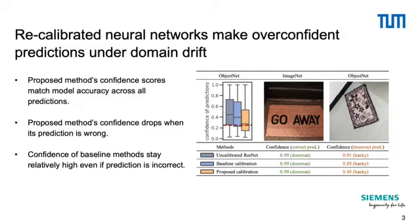As you can see in the figure on the right, the task is to recognize a doormat. The doormat in the middle is drawn from the test distribution, which is similar to the train distribution — thus all the models make a correct prediction with high confidence. The doormat on the right, on the other hand, was photographed from a different angle, and in this case all the models make wrong predictions. However, our approach yields a low confidence score reflecting model uncertainty.